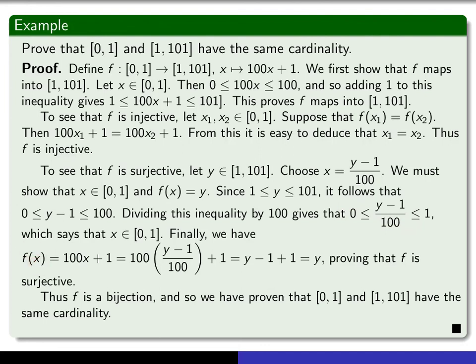And finally, you just have to show that f(x) gives you back y. So f(x) equals 100x plus 1. And substituting x for (y-1)/100, you'll see that this really does come out to be y. And that proves that f is surjective. So we've got our bijection, and therefore, this set has the same cardinality as this set.